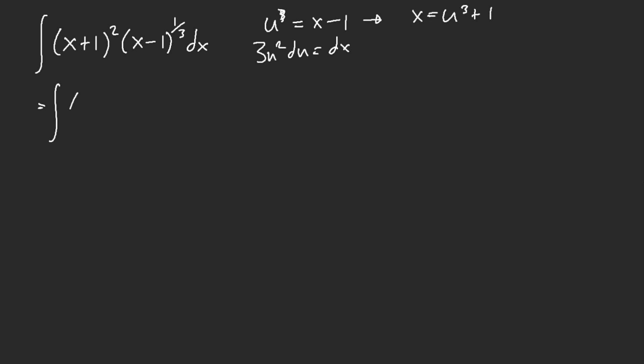So what we have is u cubed plus 2 squared, times u times 3u squared du.